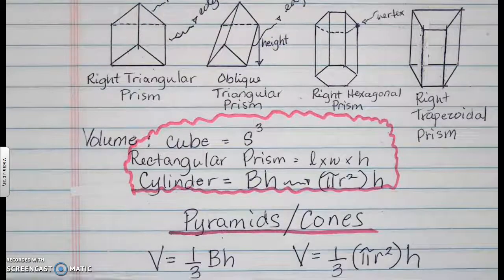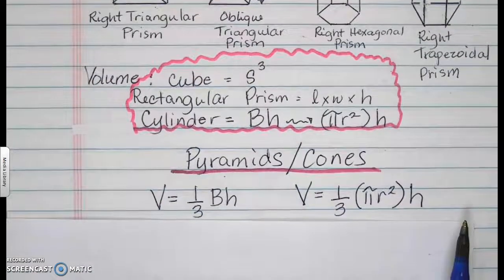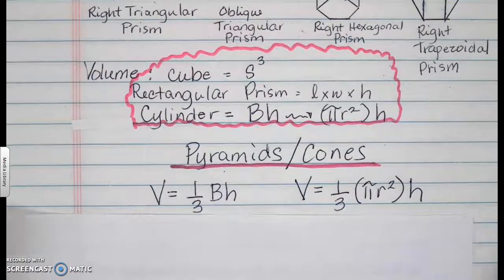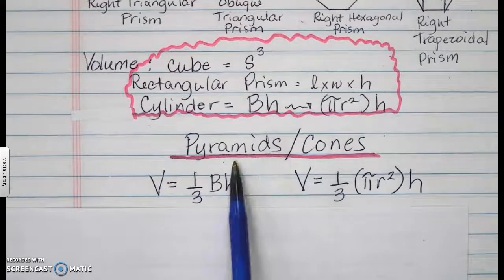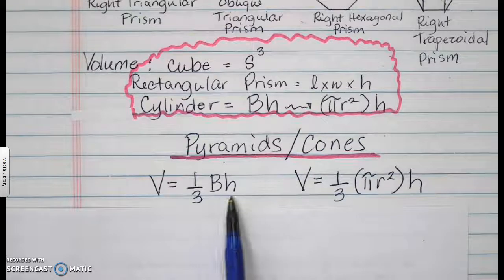The next ones are the pyramids and the cones. Pyramids and cones share the same factor of one-third. For the pyramid, it is one-third times the area of the base times the height.